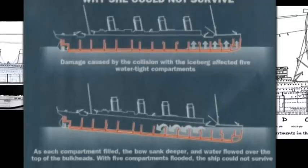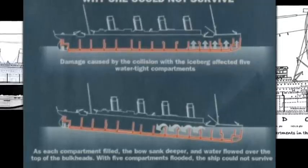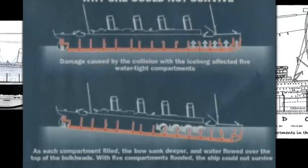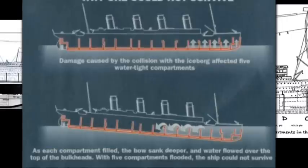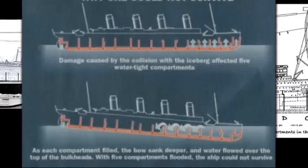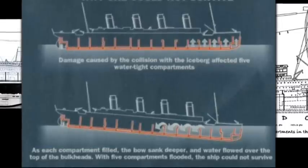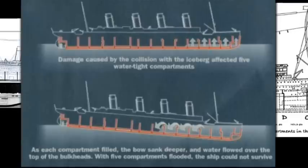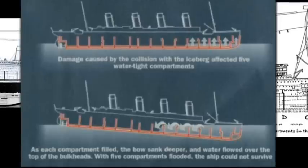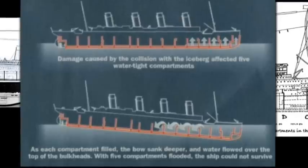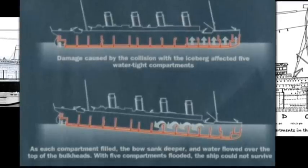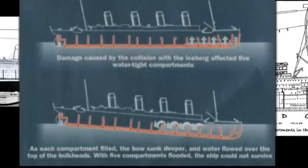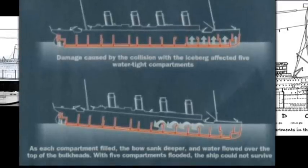The rip opened up holes in five or six of the first few watertight compartments at the front. But five watertight compartments were too many — its limit was four. As water spilled over the bulkheads from compartment to compartment, more and more water flooded into the ship, eventually bringing it down and sinking it.